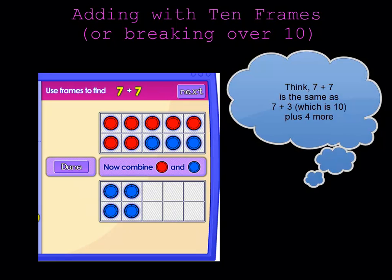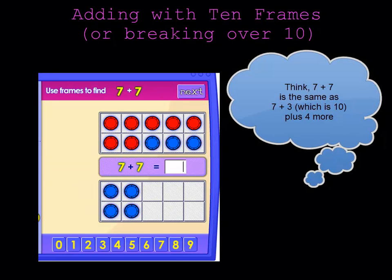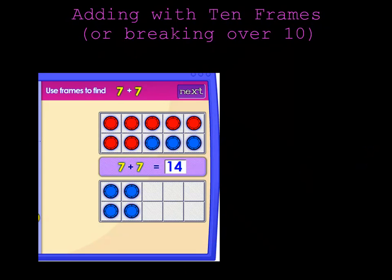So that becomes 10 plus 4 which is 14. So 7 plus 7 is 14.